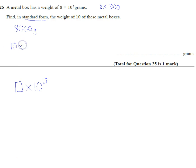10 of these boxes, we're going to multiply 10 by 8,000, that gives us 80,000, but we need to write our answer back in this standard form.